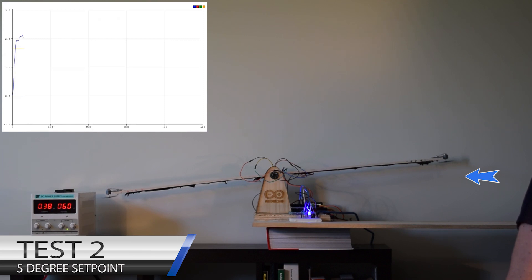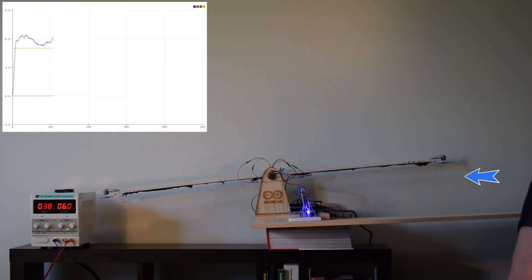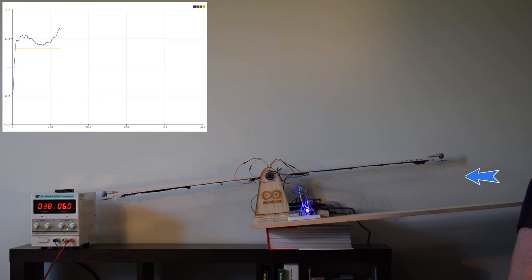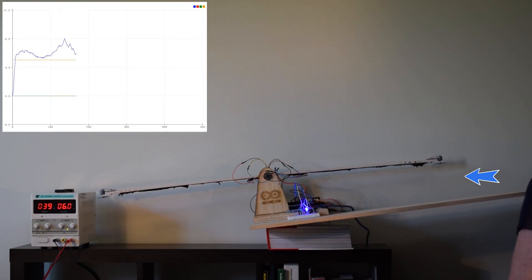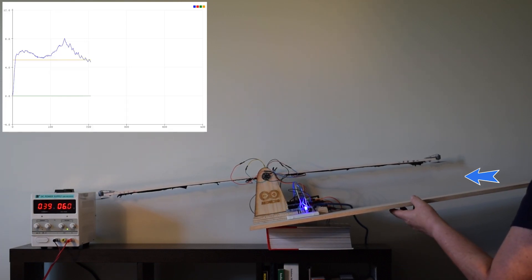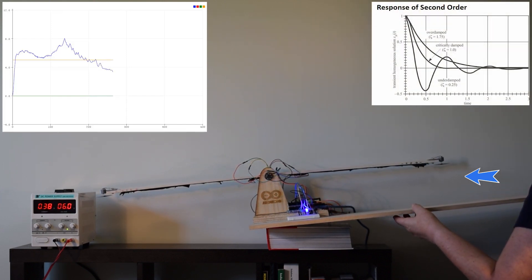Test 2 required the system to move to a fixed angle of 5 degrees at startup. The test also required that the angle of 5 degrees was maintained whilst the base was tilted. The angle starts at 0 degrees and then slightly overshoots the 5 degree target of the set point. The PID control system was successfully able to maintain the set point angle of 5 degrees when the base was tilted.